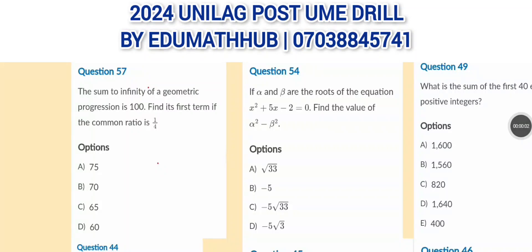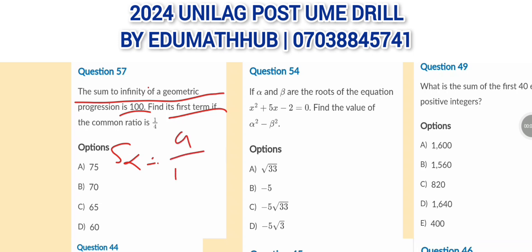Let's take the first question. We are told that the sum to infinity of a geometric progression is 100. We have to find the first term if the common ratio is 1 over 3. For a geometric progression, the sum to infinity is S∞ = A divided by 1 minus R.